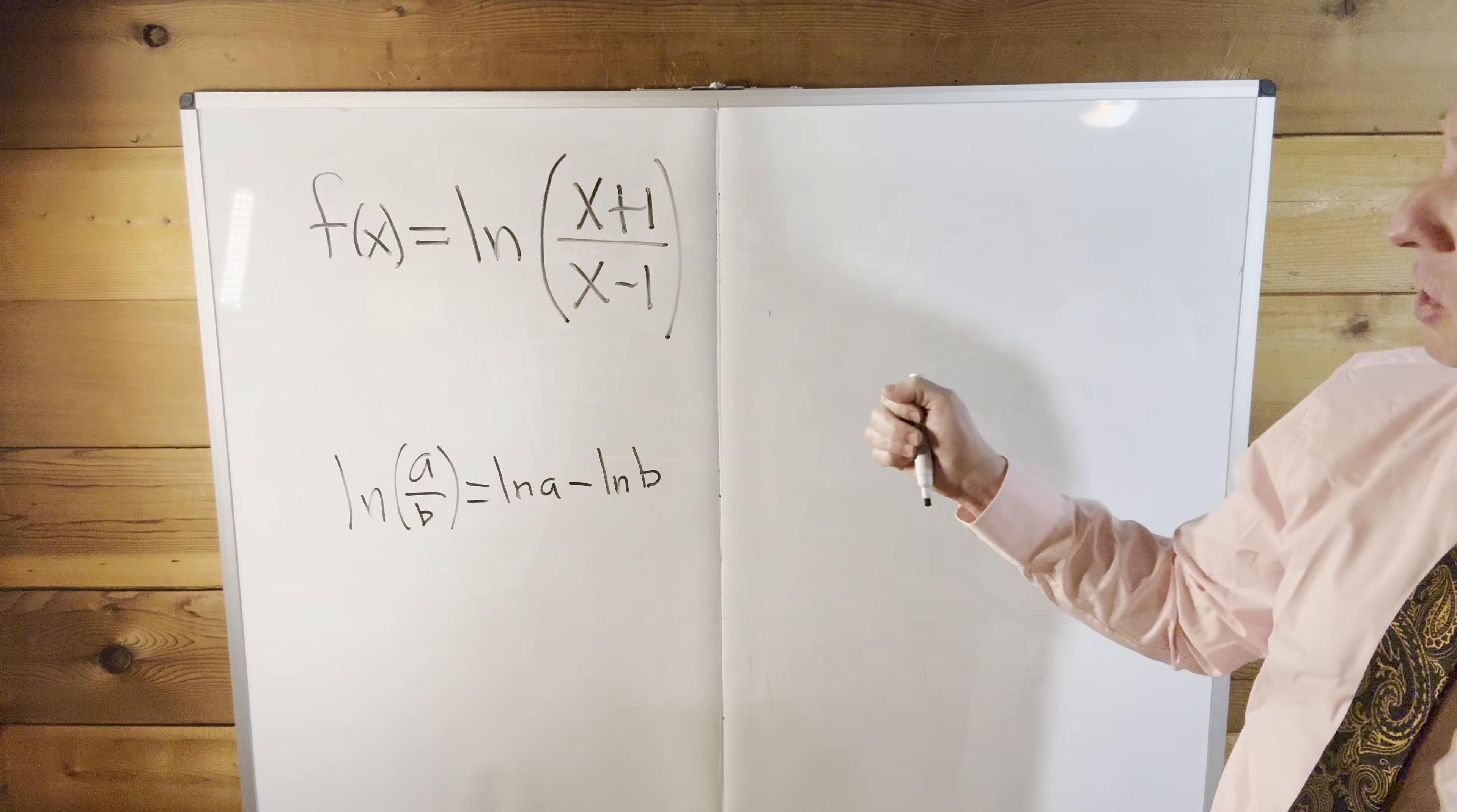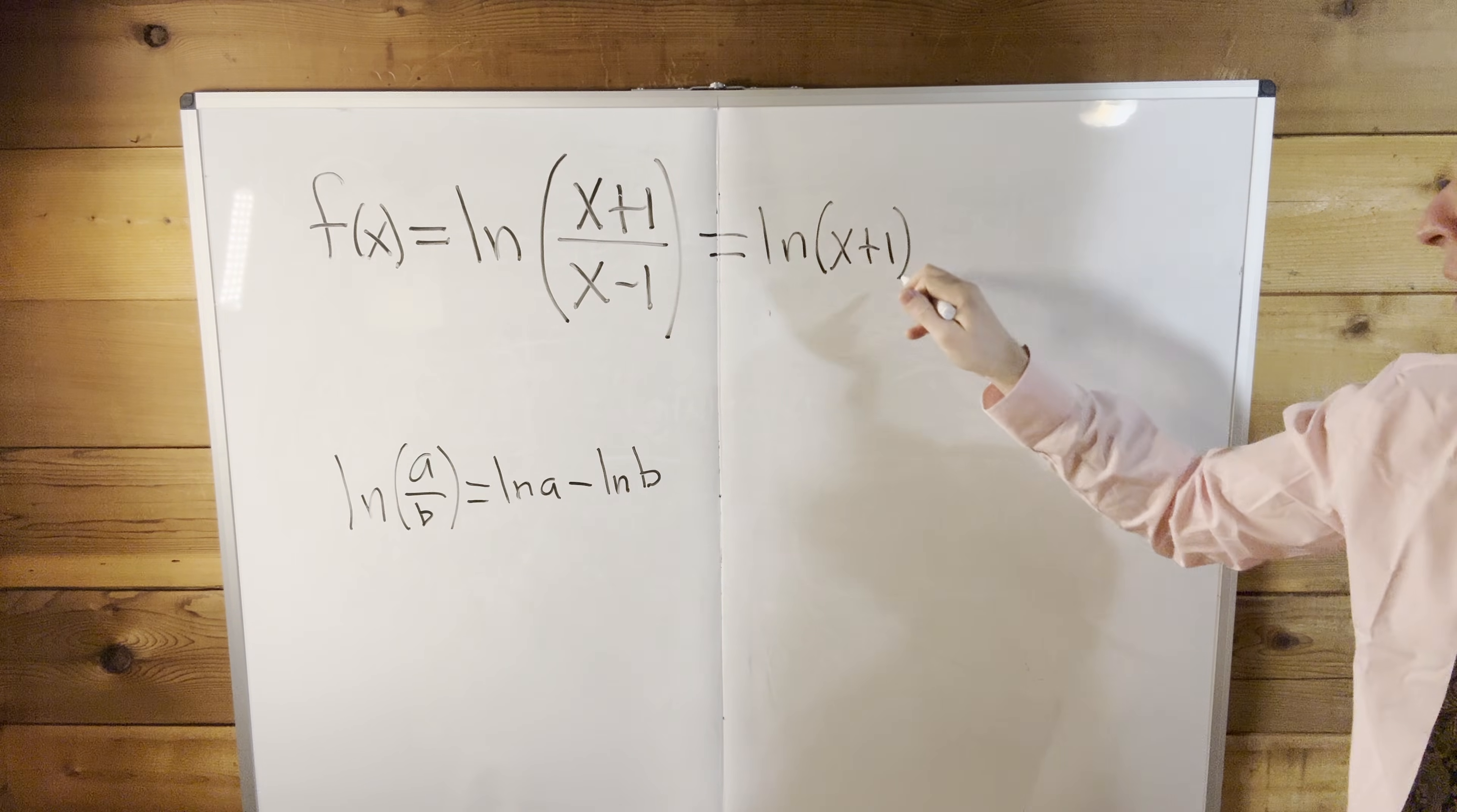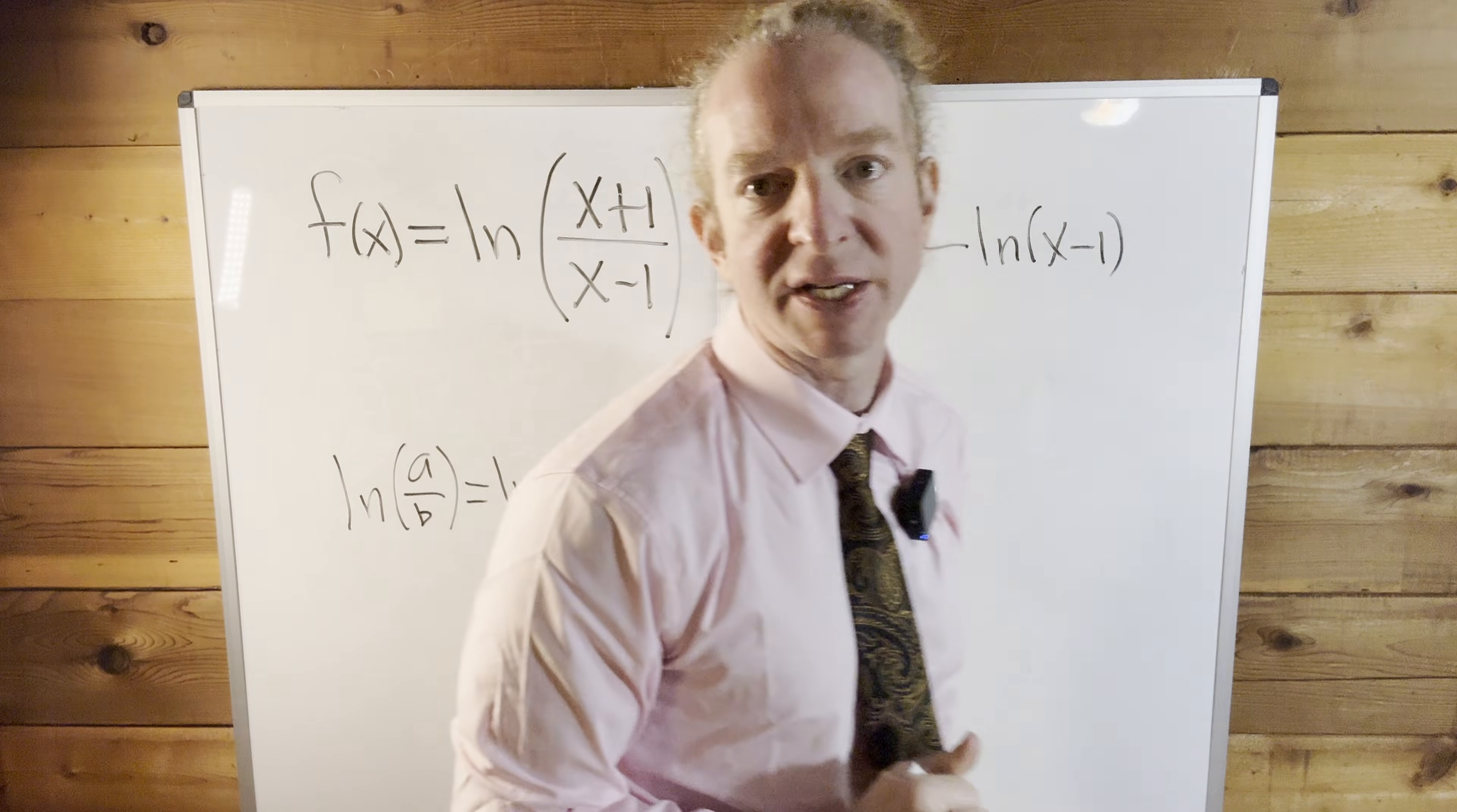So in this particular example, we'll start by rewriting our function. This is equal to the natural log of x plus 1 minus the natural log of x minus 1. Just like that. Really nice.